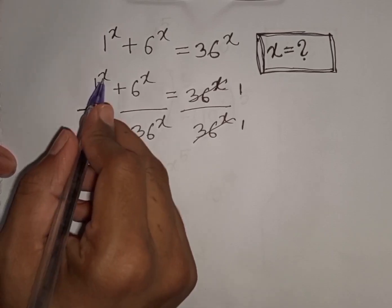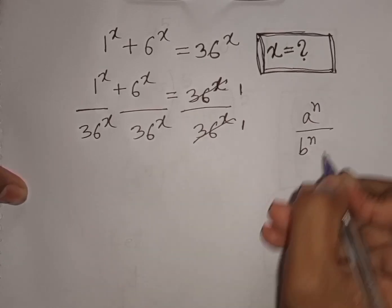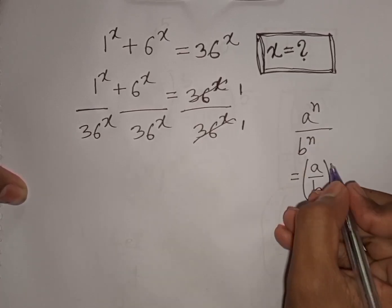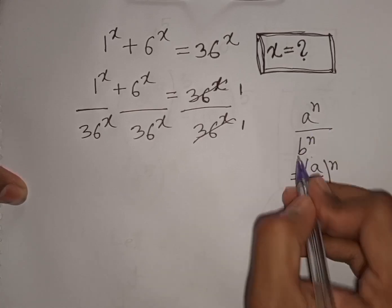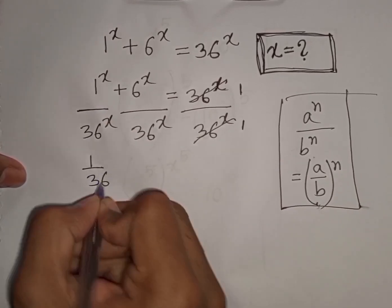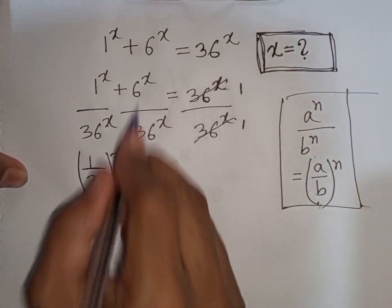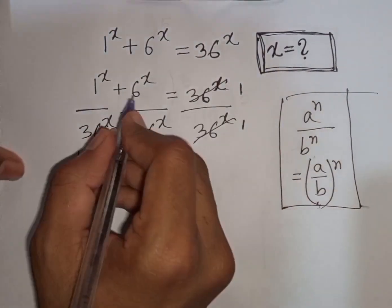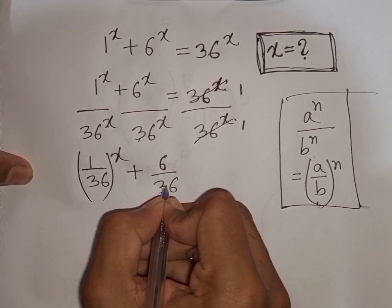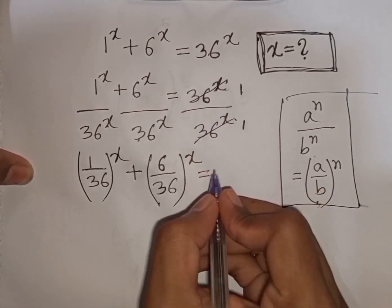From here we see x is the same power but with different bases. Remember this exponent rule: a^n × b^n = (a × b)^n — same power but different base. So according to this formula, we can write (1/36)^x + (6/36)^x = 1.